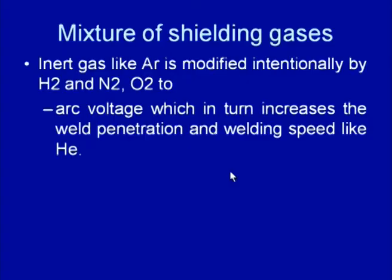Both helium and argon can effectively be used for protecting the weld pool from atmospheric contamination. However, it has been observed that the addition of small amounts of gases like hydrogen, nitrogen, and oxygen in argon helps to get better welding characteristics, especially in terms of higher arc voltage, which helps generate more heat and develop higher temperature in the arc.